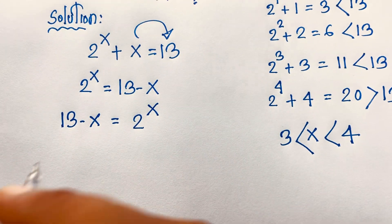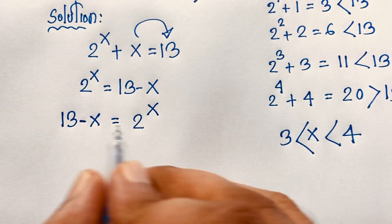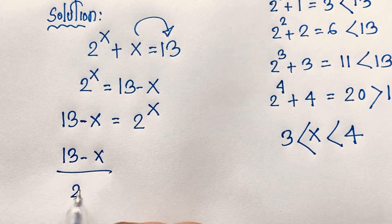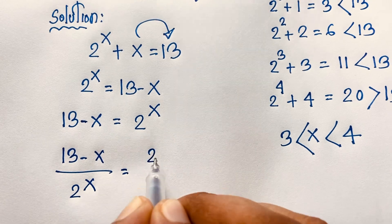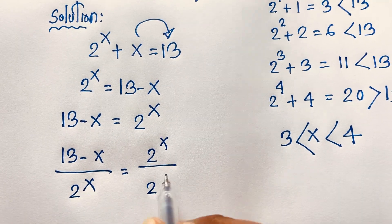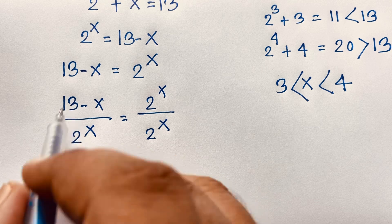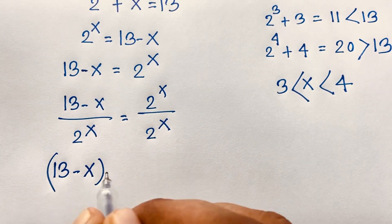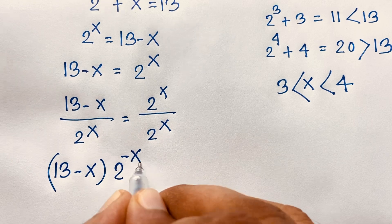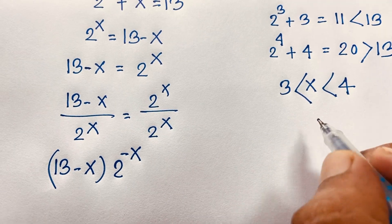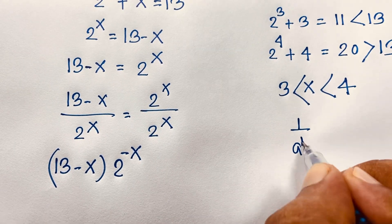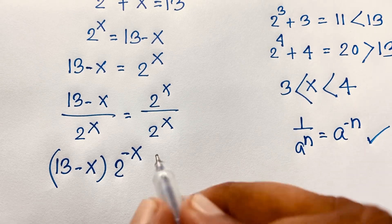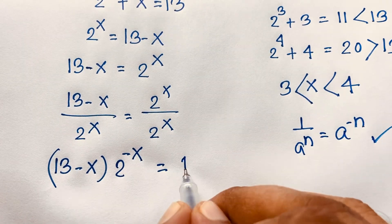Then I divide both sides by 2 to the power x. This gives 2 to the power x over 2 to the power x on the left side. The resulting expression will be 13 minus x, in brackets, times 2 to the power negative x. This is because we know that 1 over a to the power n equals a to the power negative n. And the left side divided by itself equals 1.